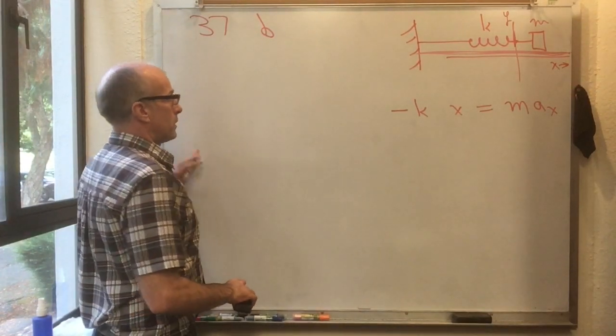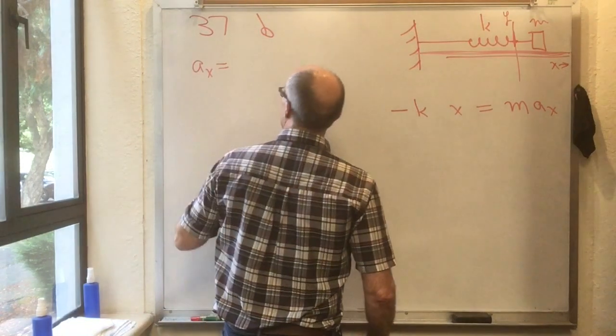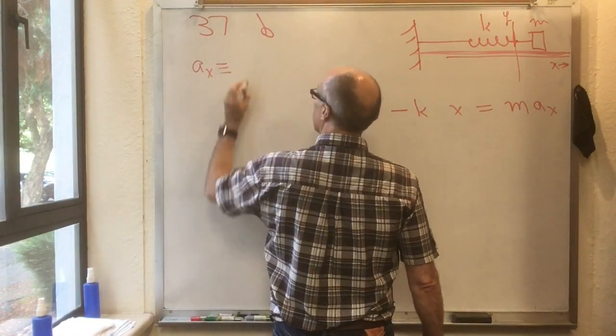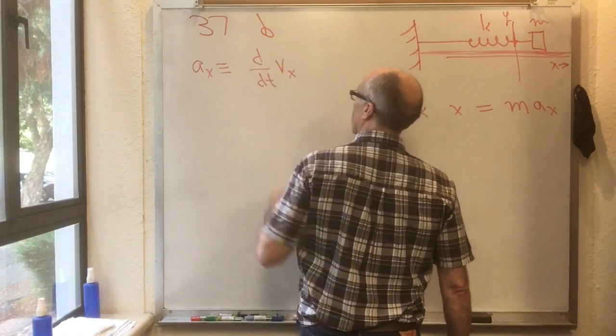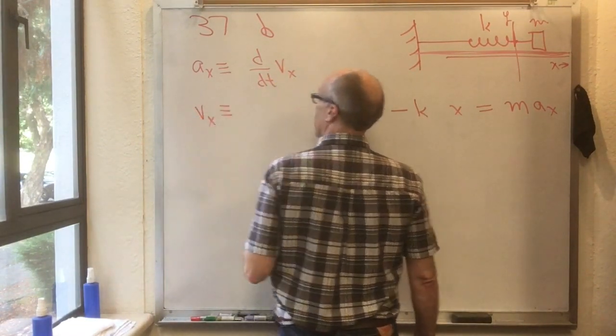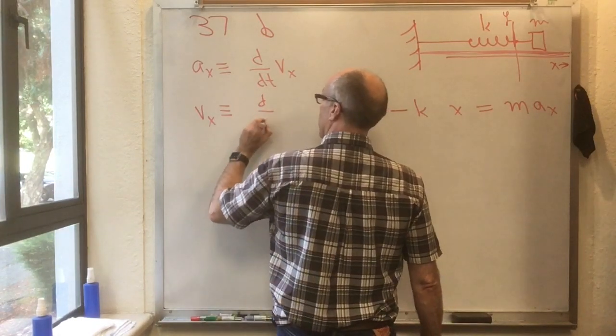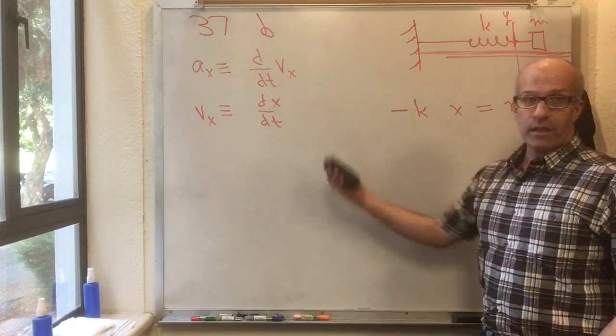Now, ax is equal to, by definition, the time rate of change of the velocity in the x direction. And the velocity in the x direction is, by definition, the time rate of change of the x coordinate. So those are definitions.